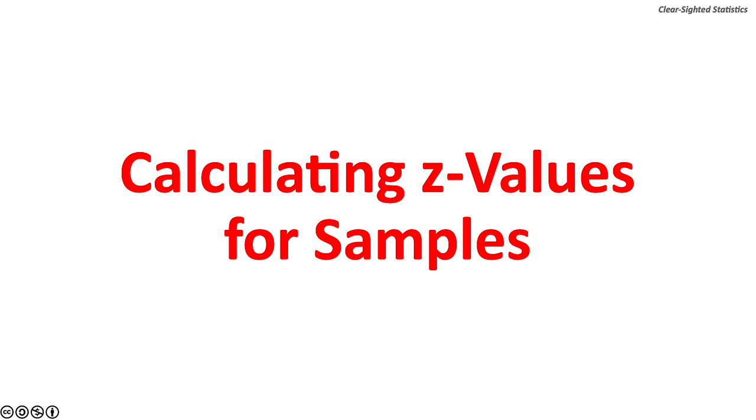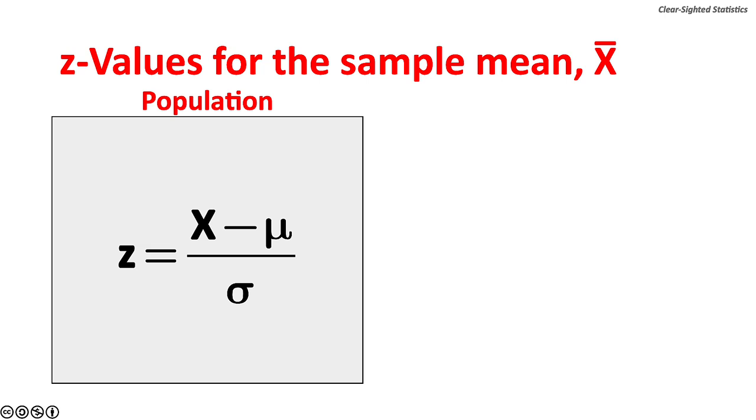let's turn to calculating z values for samples. You will recall that z values for a population are found by the random value x minus the population mean mu over the population standard deviation sigma.